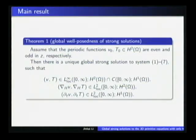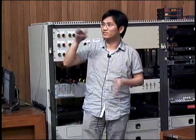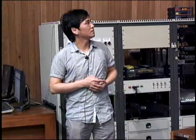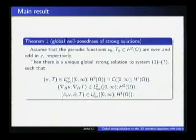We assume that the periodic functions V0, T0 belong to H2 and satisfy the symmetry in z. Then the strong solution exists globally and uniquely. Here, I should mention that for such strong solutions, we cannot expect them to be regular enough, for example, smooth. In fact, for some initial data, if we assume the solution is smooth, that is C infinity, we can show finite time blow up.